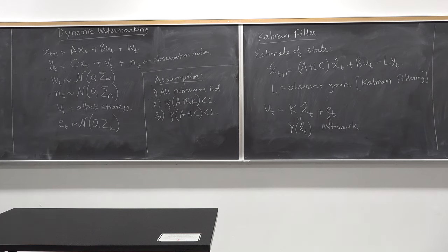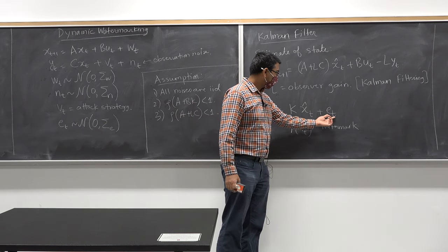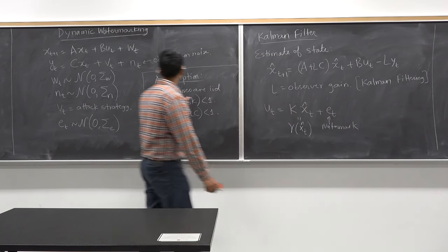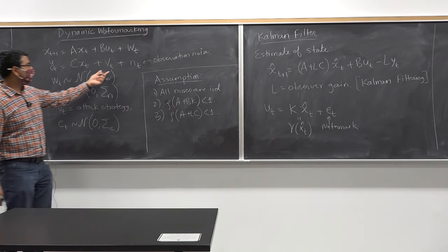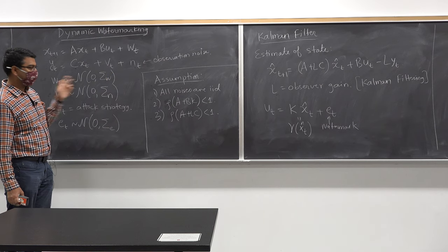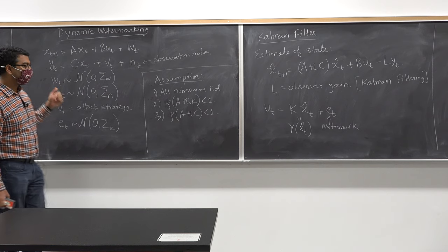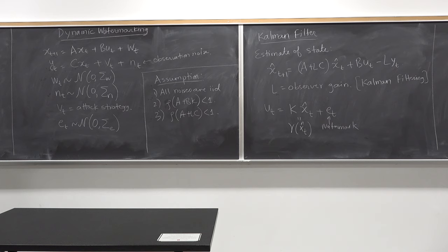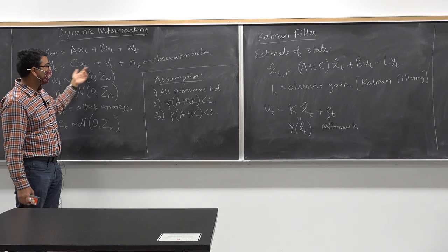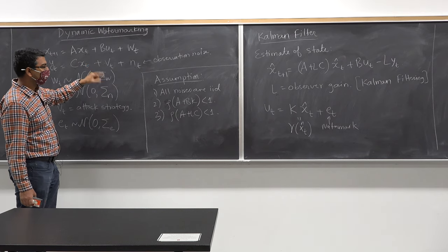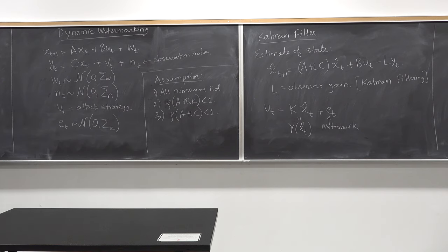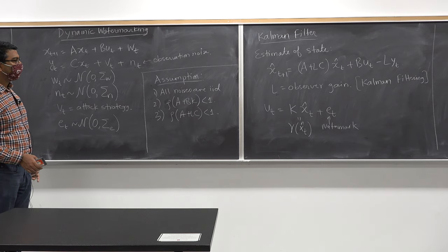These are simplifying assumptions to allow us to get to the final equations, but those equations still apply even if the IID assumption is slightly violated. The controller has added a private watermark known only to the controller, not the adversary. The adversary's goal is to persistently attack the system. As we will see, a persistent attacker will be detected using the algorithm we design. The controller's goal is to come up with a detection scheme to detect whether an adversary is changing the observation.